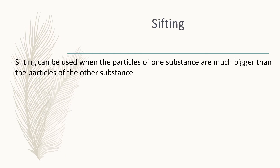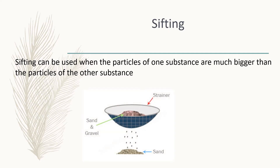The next method of physical separation is sifting. Sifting can be used when the particles of one substance are much bigger than the particles of the other substance. A sieve with holes of a specific size is used. The mixture is put into the sieve and it is then vibrated or shaken to allow the particles that are small enough to fall through. Here we see a picture of a strainer with sand and gravel — the gravel stays behind and the sand falls through.